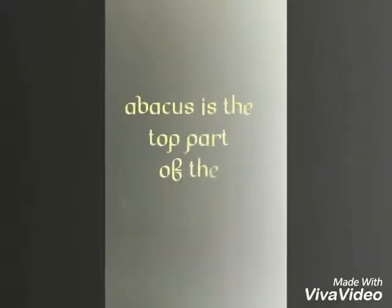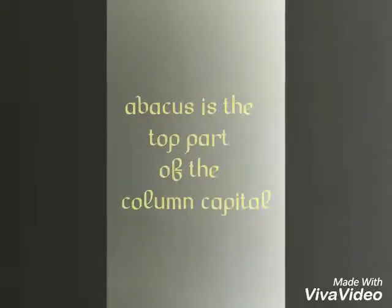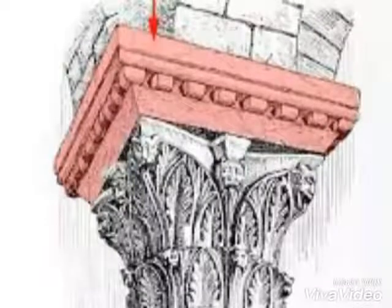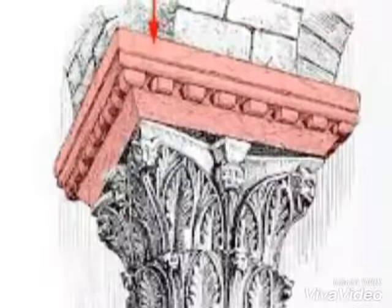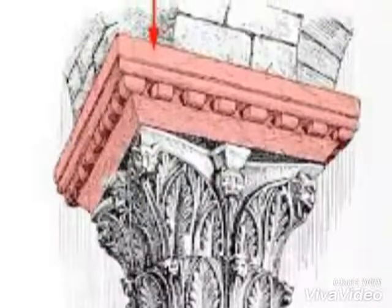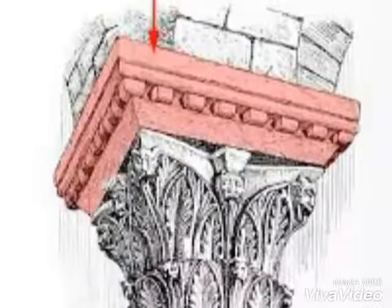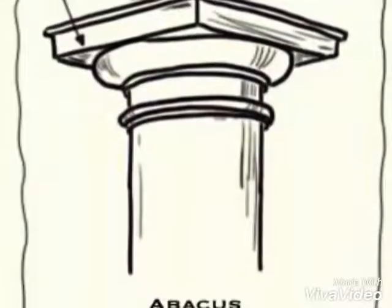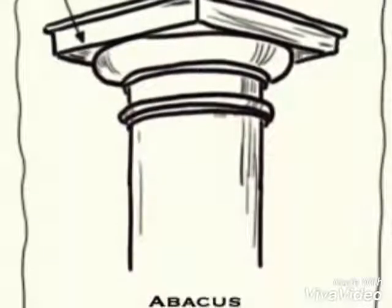The first is abacus. Abacus is the top part of the column capital. You can see the red area — that is abacus. It is a type of slab. You can see in the picture.